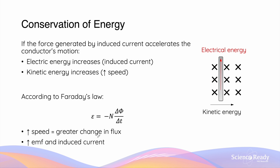The association between Lenz's law and conservation of energy can also be understood by conceptualizing the contrary. What happens if the force is not opposing? What happens if the force actually facilitates the movement of the conductor? If the force generated by the induced current hypothetically accelerates the conductor's motion rather than opposing it, this will cause two things: first, the electrical energy increases due to the production of the induced current, and at the same time, due to the acceleration of the conductor's motion, its kinetic energy also increases. So when electrical energy and kinetic energy both increase at the same time, this will increase the total energy of the system, producing energy out of nowhere, which contradicts the law of conservation of energy.